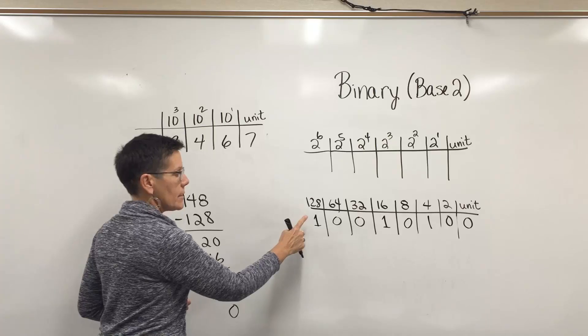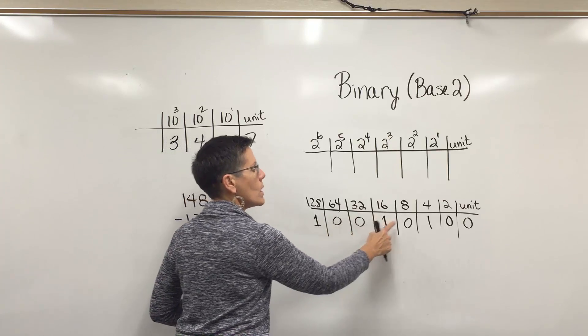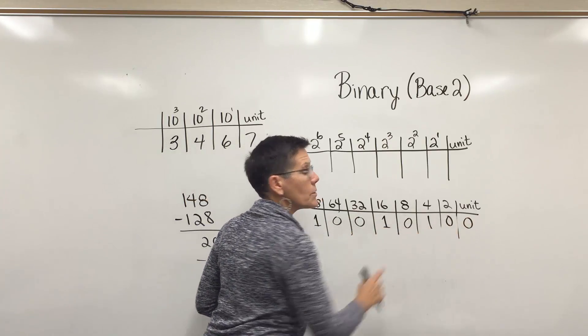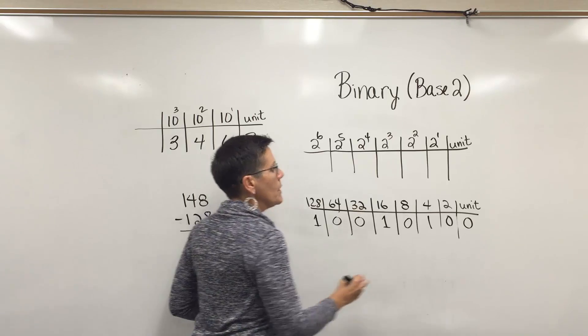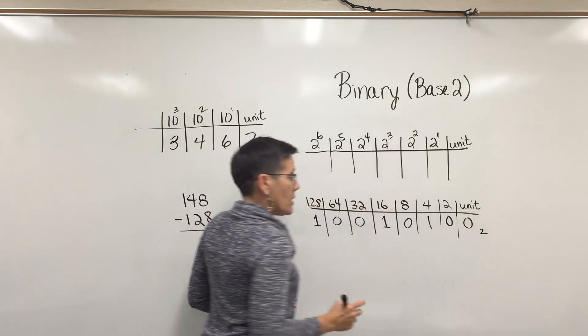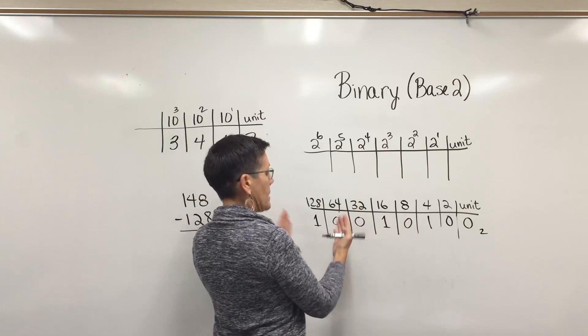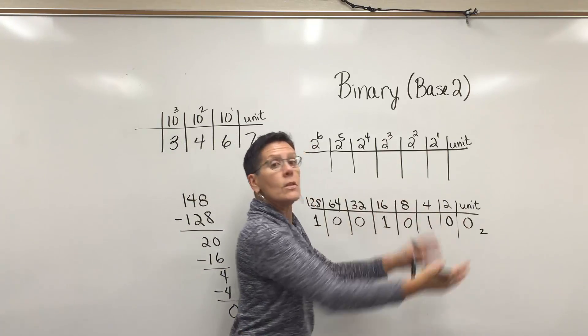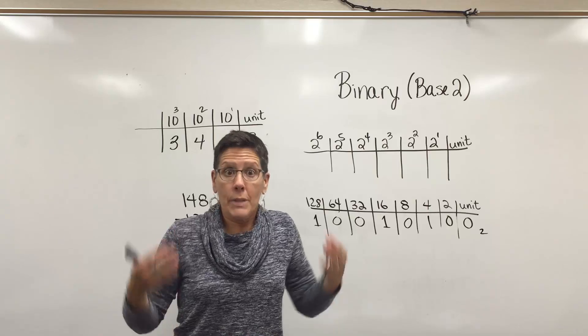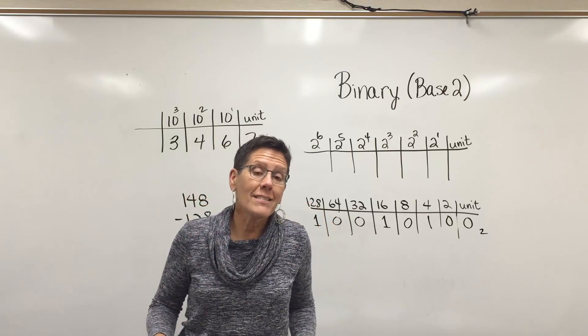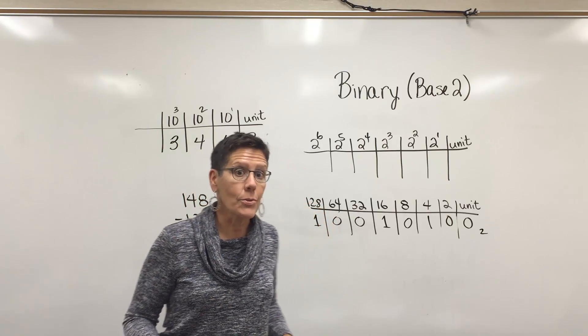The number 148 is 10010100. That's how you say the number in binary notation. In case you might have thought of saying it as 10,000,10,100, that would be implying that it's a base 10 number. But it's a base 2 value.